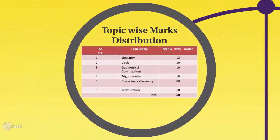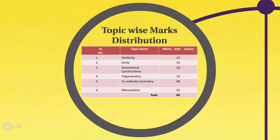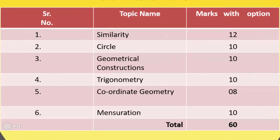Topic-wise marks distribution: the first topic is similarity, with marks with option being 12. The second topic is circle, with marks with option being 10. The third topic is geometrical constructions, with 10 marks with options.